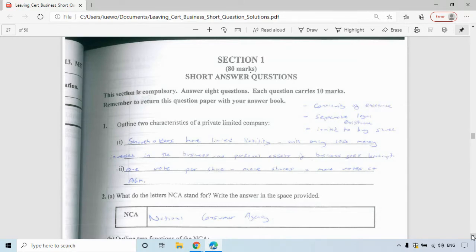Question one was to outline two characteristics of a private limited company. There are a number of them here. Shareholders have limited liability, so they only lose the money invested in the business, no personal assets if the business goes bankrupt. So you only lose the money you invest and nothing else. There's one vote per share, so the more shares, the more votes at the AGM.